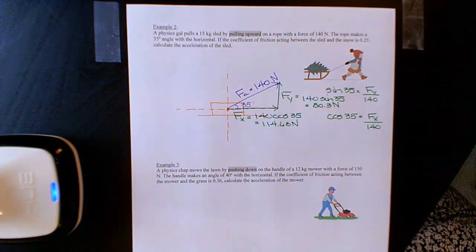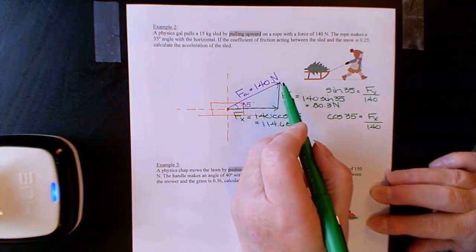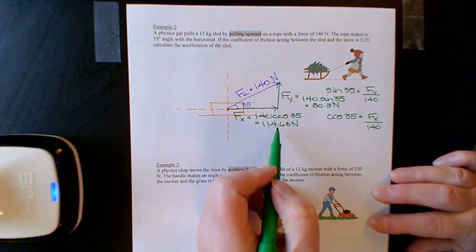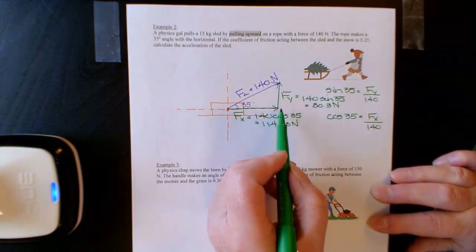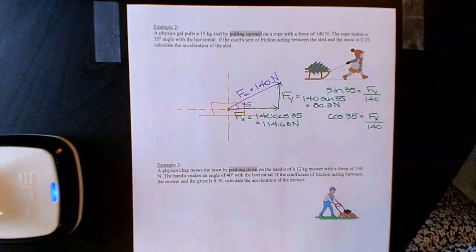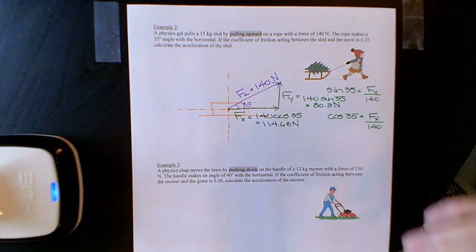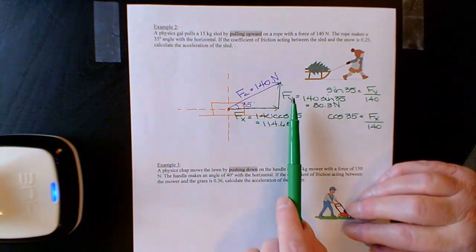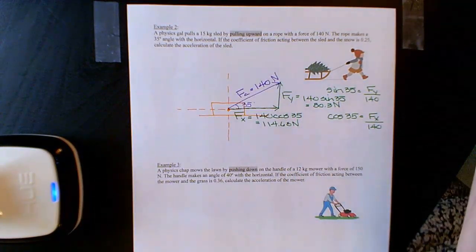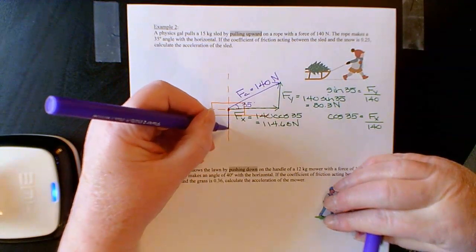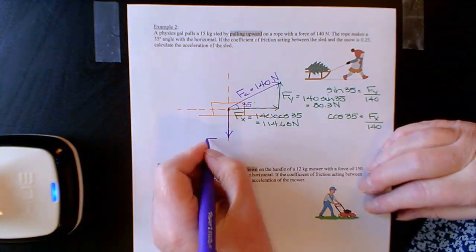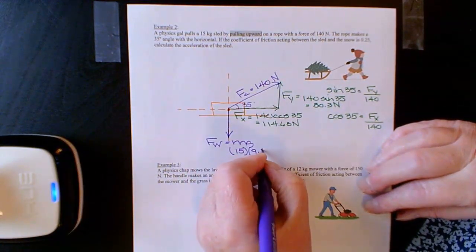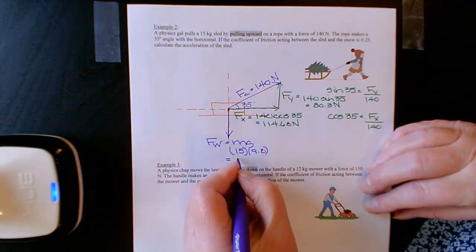When pulling at an upward angle, part of the pulling propels the sled in the x direction — 114.68 newtons — but it also creates an upward force of 80.3 newtons at the same time. I'm not saying the corner of the sled is being lifted off the ground, but there is an upward force acting on the sled. There is also a downward gravitational force: 15 times 9.8 equals 147 newtons.